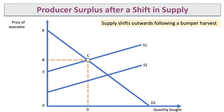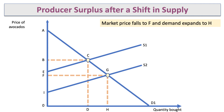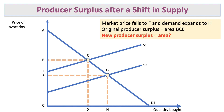Let's assume there's a bumper harvest. Supply shifts outwards — S1 shifts to S2. The price goes down from B to F, and because the price has fallen, you move down the demand curve from C to point G. The quantity bought and sold increases from D to H. The original producer surplus was area BCE.